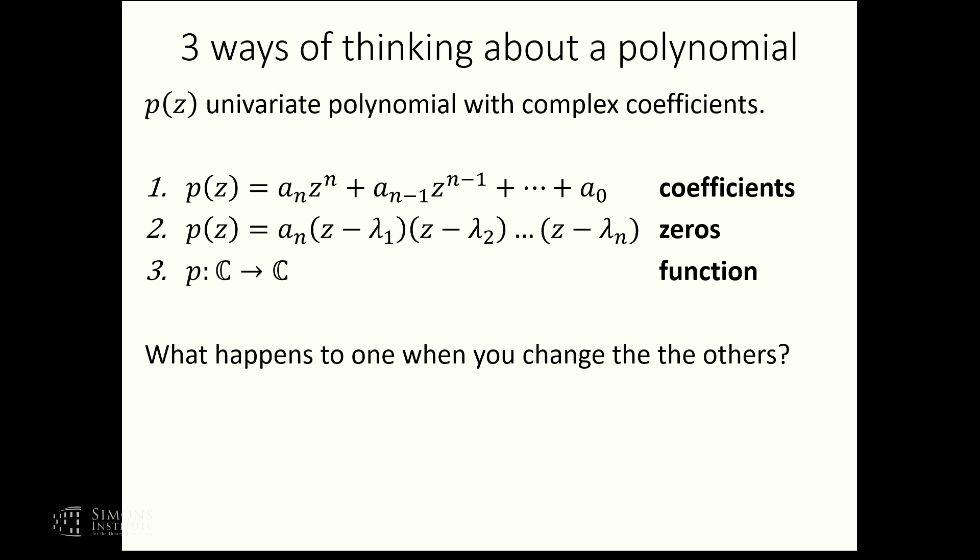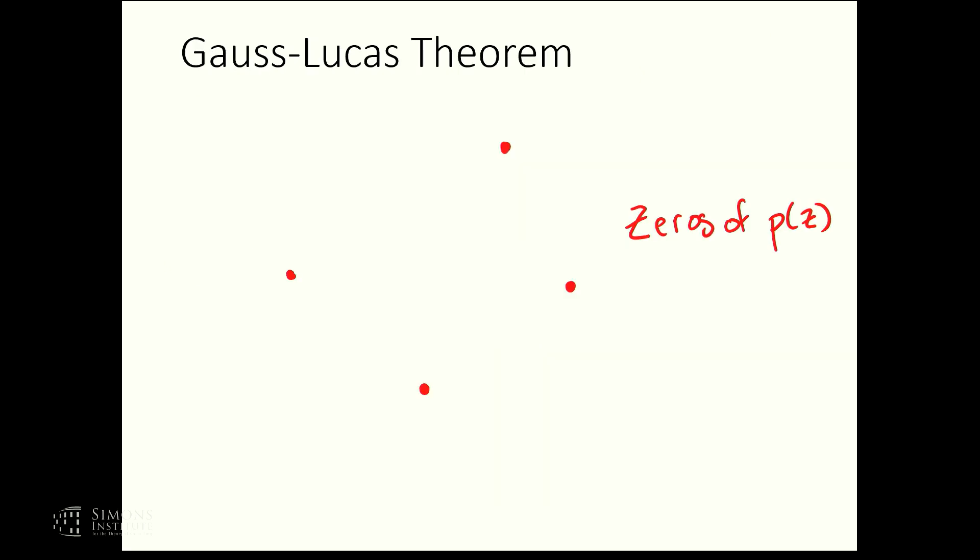So maybe one of the first theorems in this area, which really is a prototype for much of what follows, is the Gauss-Lucas theorem. So this is from 1800, something like that. And I'm just going to tell you what the theorem says with a picture. So let's suppose I have a polynomial p of z of degree 4, and let's say these are zeros in the complex plane. So now I can ask the question, what's going to happen when I differentiate this polynomial. That's some natural operation on the polynomial. When I differentiate a polynomial of degree 4, I'm going to get a polynomial of degree 3. So it's going to have some three other zeros. And you could ask, what's the relationship between the zeros of the derivative and the zeros of the original polynomial? And it turns out there's a very nice answer to this. So the Gauss-Lucas theorem says that the zeros of the derivative are contained in the convex hull of the zeros of the polynomial.